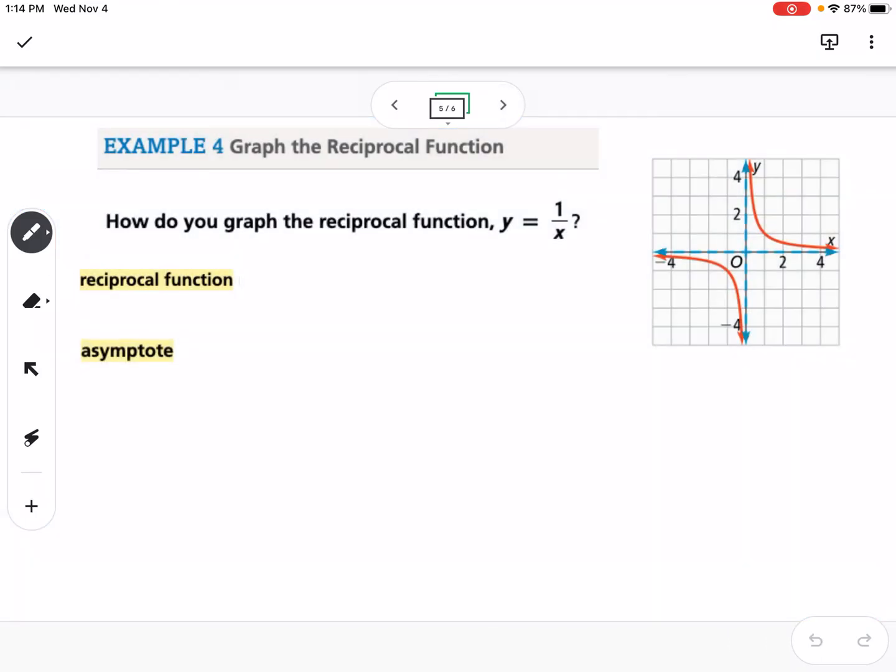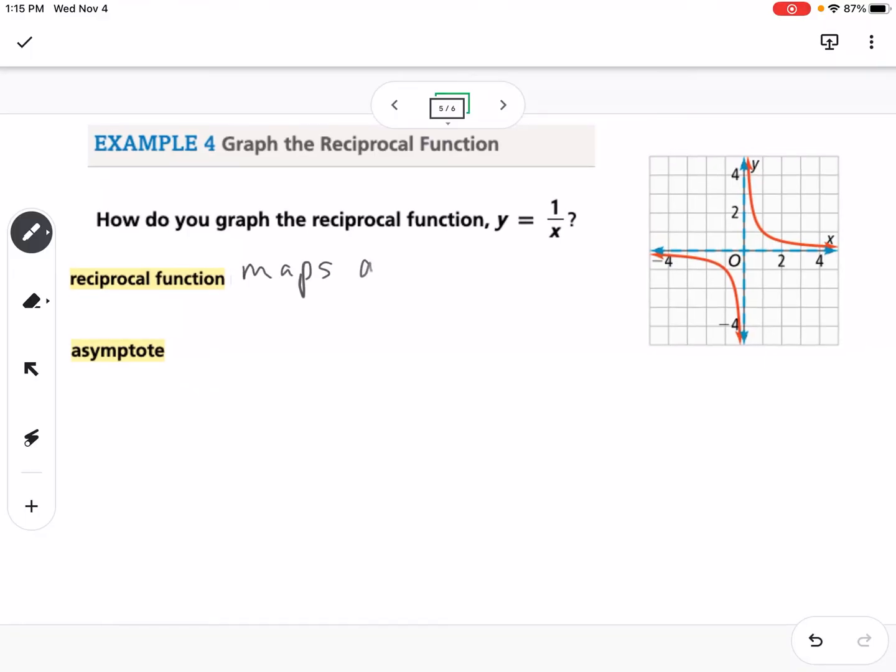Example four is to graph the reciprocal function. The reciprocal function is the parent function for rational functions, and that's what we're starting in this chapter. Chapter four is all about rational functions. It's y equals 1 over x. So a reciprocal function maps all numbers to their reciprocals.